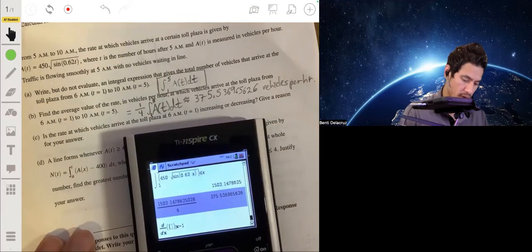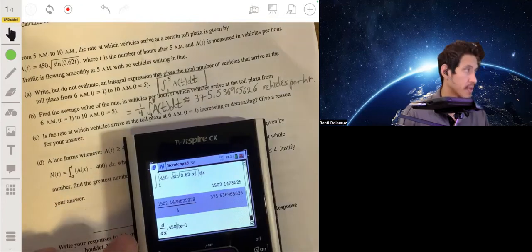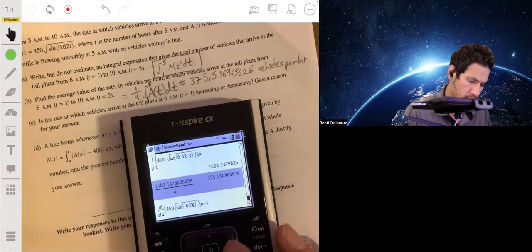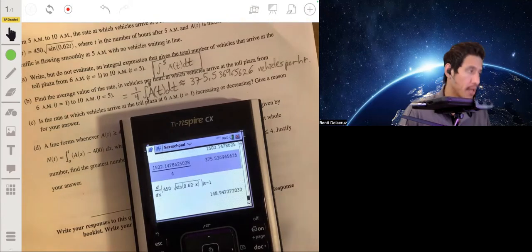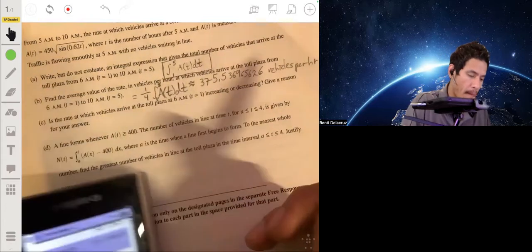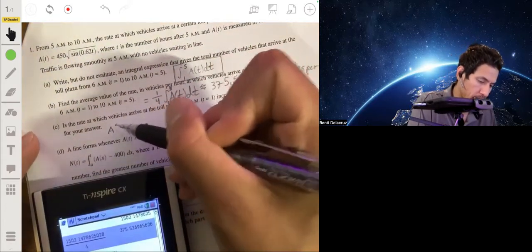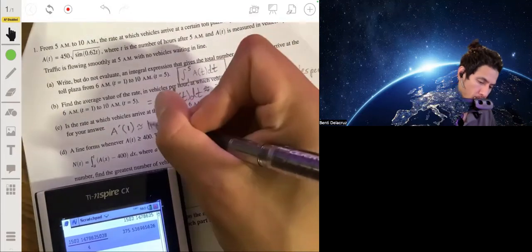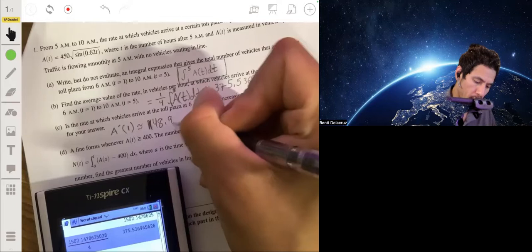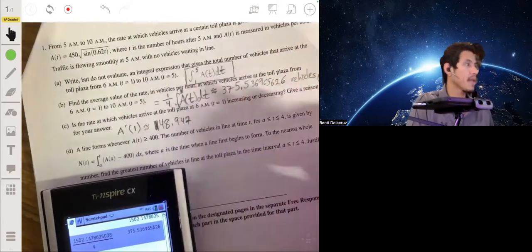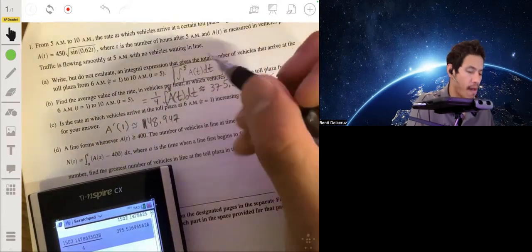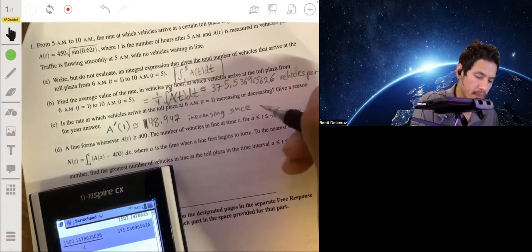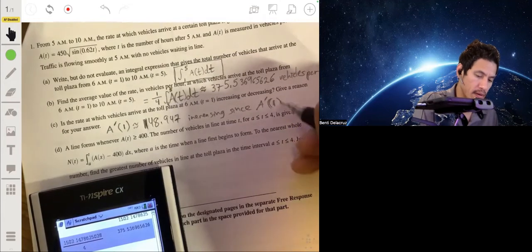We don't have to worry about going through a tedious calculation. So we can go ahead and calculate the numerical derivative at 1. First derivative and we'll have 450. Again, be careful to make sure you enter your expression correctly. You'll get about 148.947. So a prime of 1 is 148.947. And we can say that's increasing since the derivative of a of t is positive. Since a prime of 1 is greater than 0.